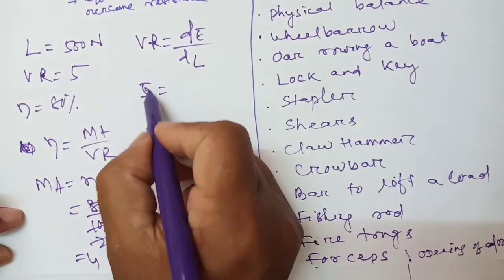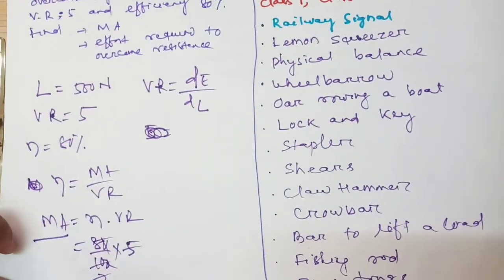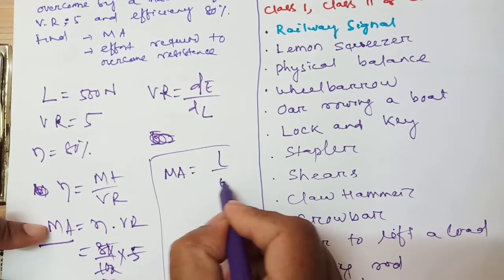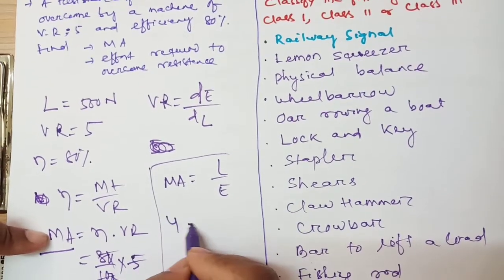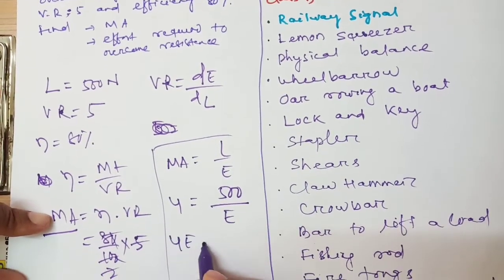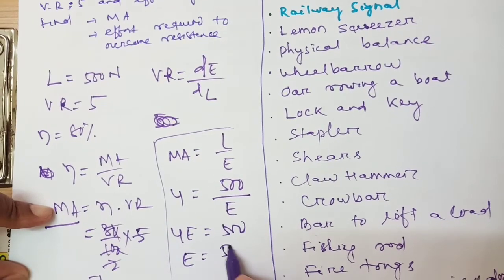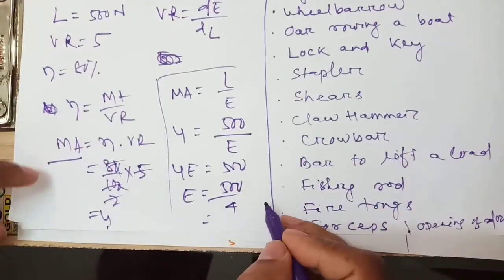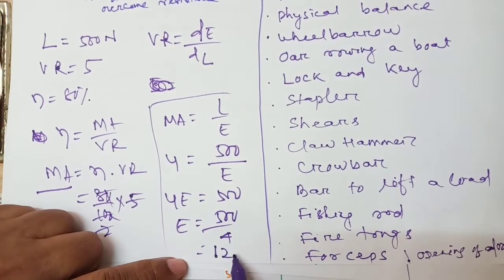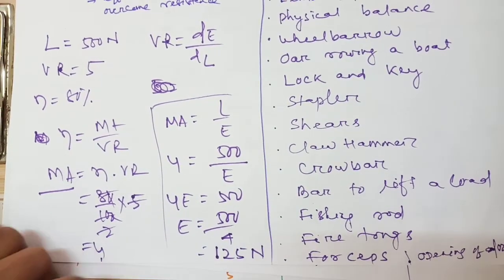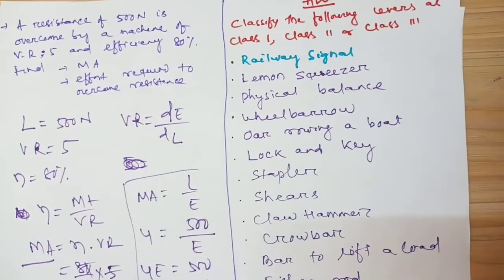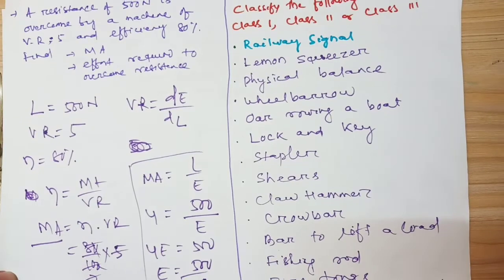Now find effort. MA = Load by Effort, so 4 = 500 Newton by effort. Therefore effort E = 500 by 4 = 125 Newton. Mechanical advantage is 4 and effort is 125 Newton. Note that mechanical advantage is a ratio and has no unit.